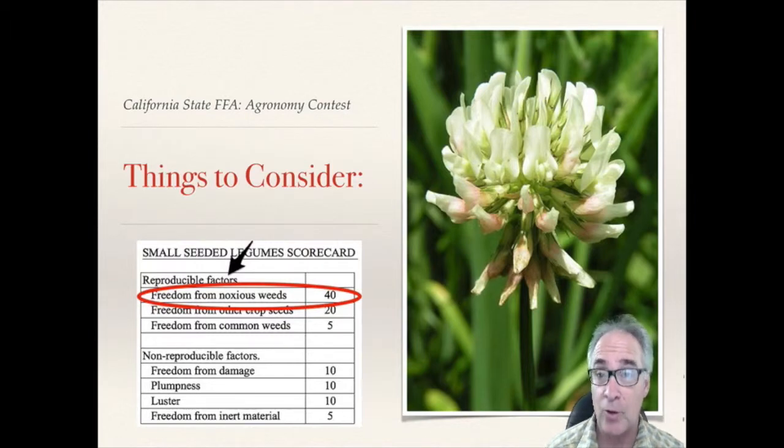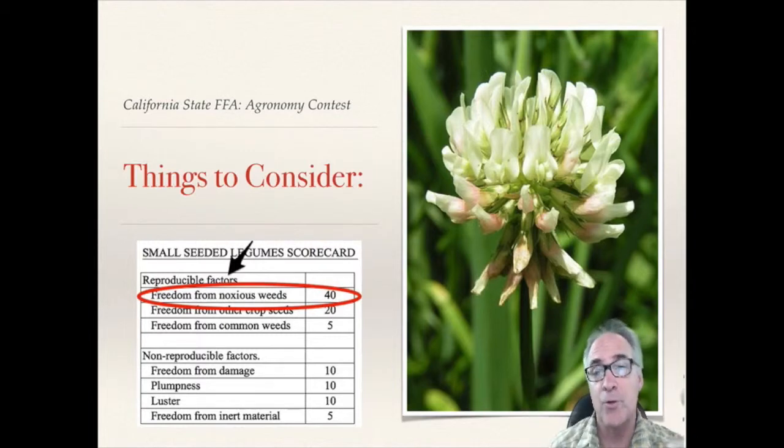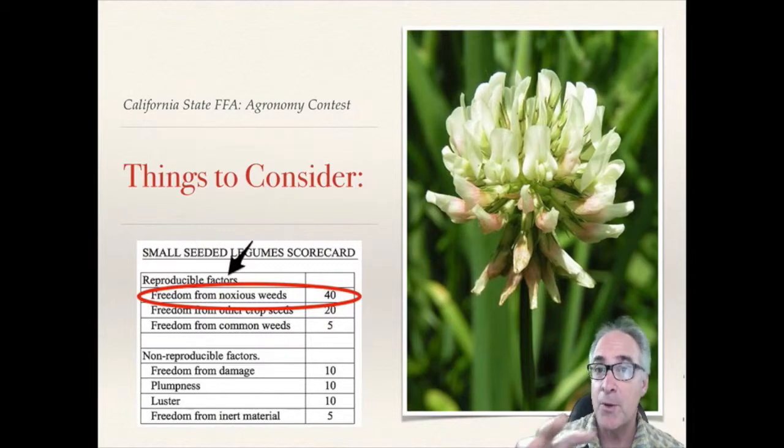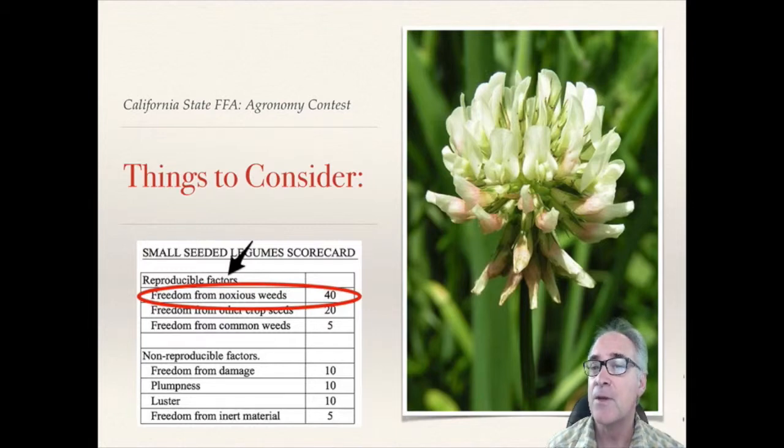There are basically two kinds of things you need to be judging when you're looking at Ladino clover: the reproducible factors and non-reproducible factors. The reproducible factors are things that will reproduce out in the field, things like weeds.